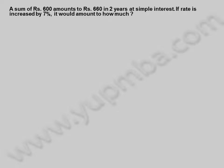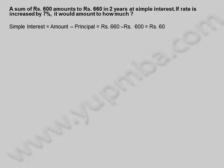A sum of 600 rupees amounts to 660 rupees in two years at simple interest. If the rate is increased by 7%, it would amount to how much? Simple interest equals amount minus principal, which is 660 minus 600, equal to 60 rupees. Simple interest equals principal into time into rate of interest divided by 100.